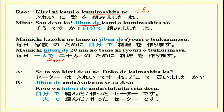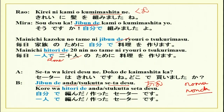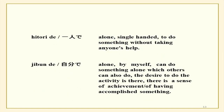Seta wa kirei desu ne. Doko de kaimashita ka? — Where did you buy this sweater? Jibun de tsukutta seta desu — the person is saying I haven't bought it, I could have, but I made it on my own. Anda seta desu. Kore wa hitori de anda seta desu — this is the sweater I have knitted myself, nobody helped me, I made it all alone without any help.